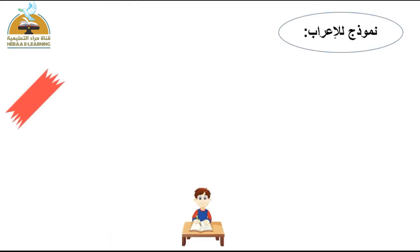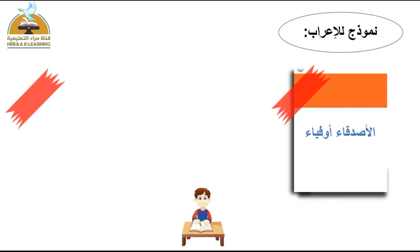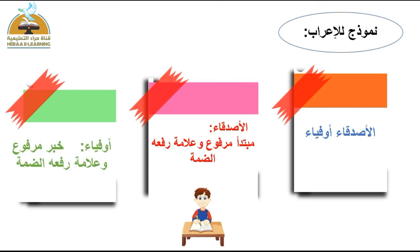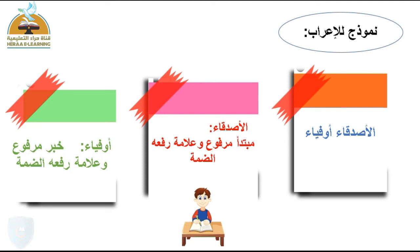نموذج للإعراب: الأصدقاء أوفياء. الجملة جملة اسمية بدأت باسم. الأصدقاء جمع تكسير لتغير صورته عند الجمع. الأصدقاء مبتدأ مرفوع وعلامة رفعه الضمة. وأوفياء هي الخبر التي أخبرتنا عن المبتدأ، وهي أيضاً جمع تكسير، خبر مرفوع وعلامة رفعه الضمة.